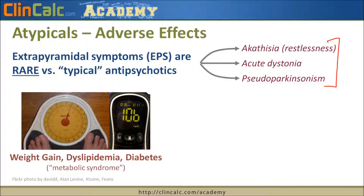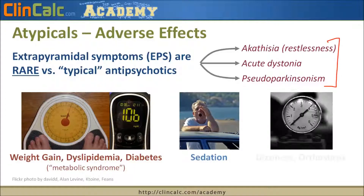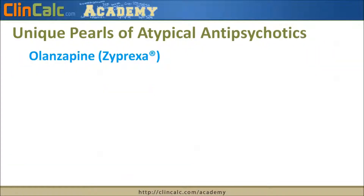What we do see instead with atypicals are some unique adverse effects. One is weight gain, dyslipidemia, and diabetes — classified under the umbrella term metabolic syndrome. With certain atypical antipsychotics we can see more weight gain and risk factors for cardiovascular disease. We also see quite a bit of sedation with some agents, and dizziness and orthostasis — feeling lightheaded when standing up too quickly.